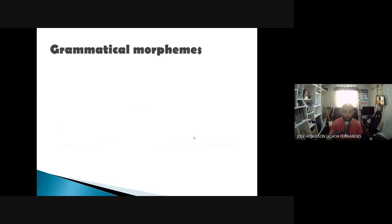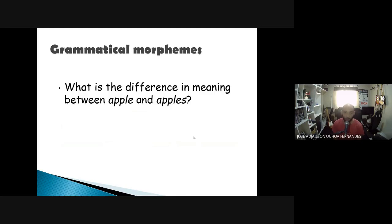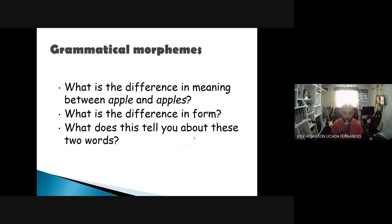Now what are grammatical morphemes? Grammatical morphemes are opposed to lexical morphemes. So let's see the difference in meaning between apple and apples. What is the big difference in meaning here? What's the difference in the form of the word? Just the final 's', the final suffix. What does it tell you about these two words? Well, these two words do not change meaning. We just change grammar to give the idea of plural, but apple, apples, they have a very close meaning.